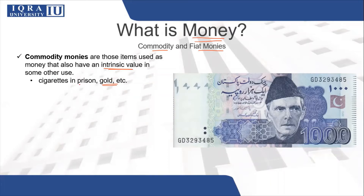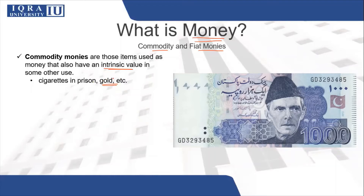Similarly, you have cigarettes in prison. Usually in prisons, if you want to purchase something, cigarettes are used for that purpose. But one of the problems with commodity monies is that their value depends upon whether other people share the same value for them. For example, if nobody in that prison smokes, cigarettes will no longer work as a medium of trade. Similarly, if nobody is interested in gold and it has no demand, then it cannot be used for trading because nobody will be willing to purchase it, so it will no longer be a medium of exchange.